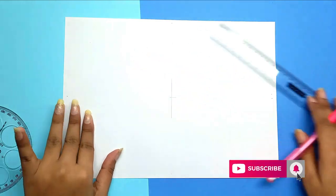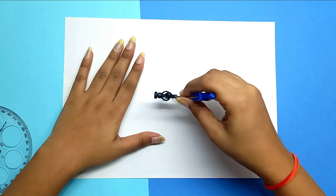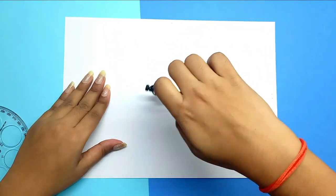First of all, you need to find the center of the page on which you are working. Then you need to put a compass in the center and draw circles of different radii.